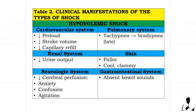Hypovolemic shock signs and symptoms — cardiovascular system: decreased preload, decreased stroke volume, and decreased capillary refill. Pulmonary system: tachypnea that may lead to bradypnea as a late sign.